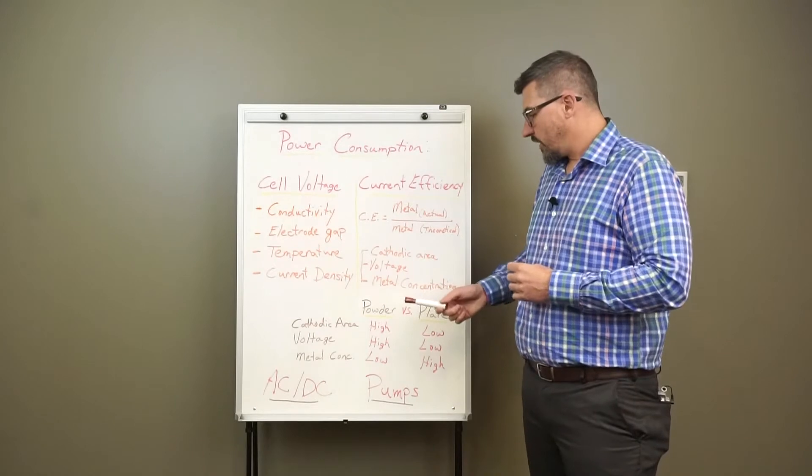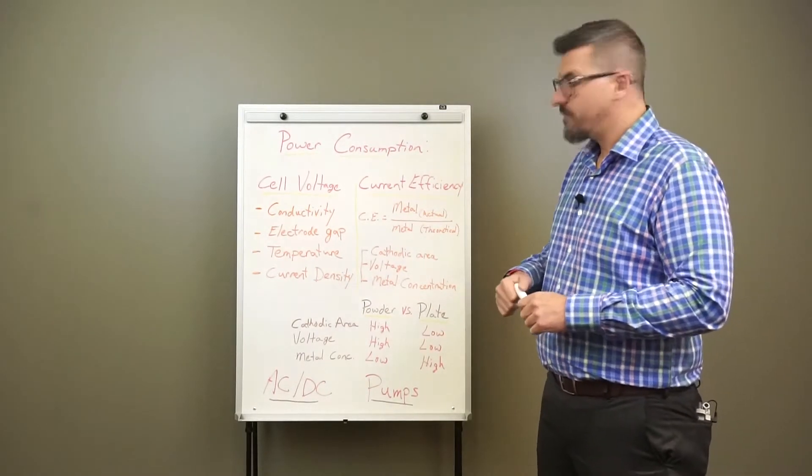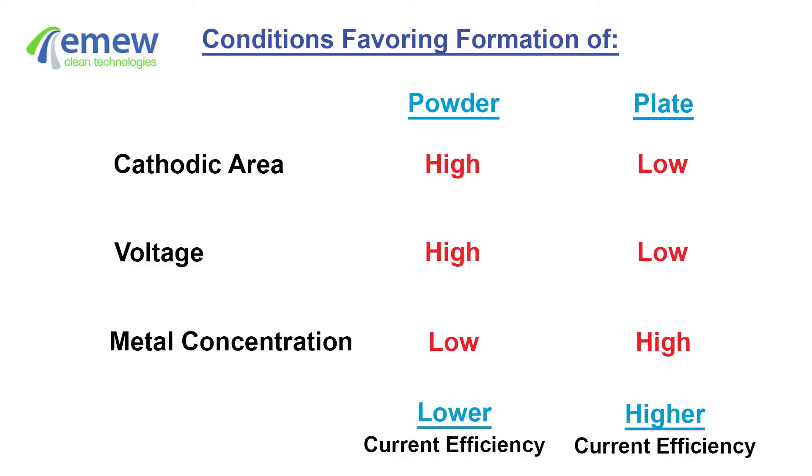So if we take a look at the conditions, for example, that would favor the production of powder, we're looking at a high cathodic area, a high cell voltage, and a low metal concentration. If we compare this to the conditions that favor plate, we're looking at a low cathodic area, a low voltage, and a high metal concentration. So you can see that the current efficiency really will vary depending on the conditions that you'll find within the electrowinning cell.